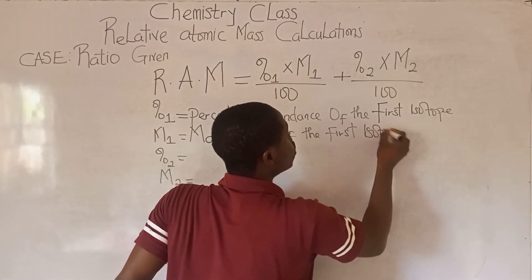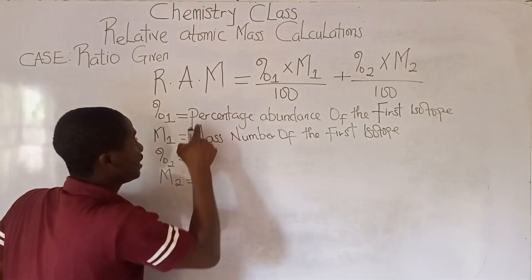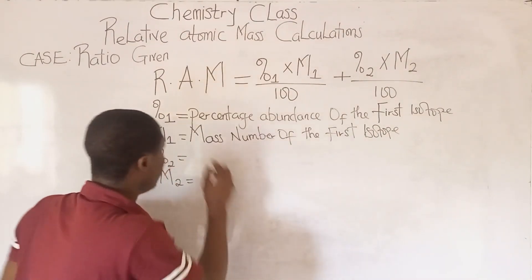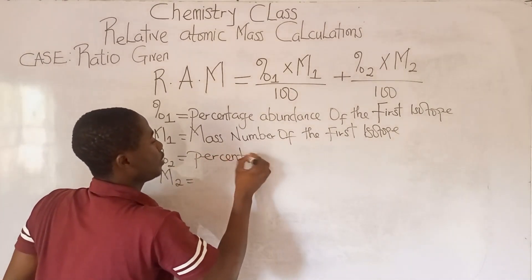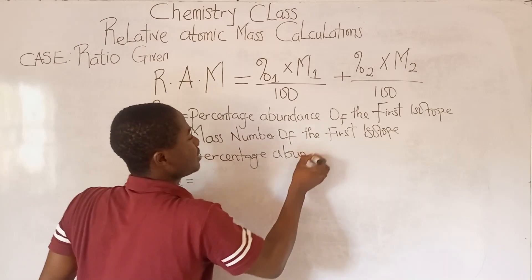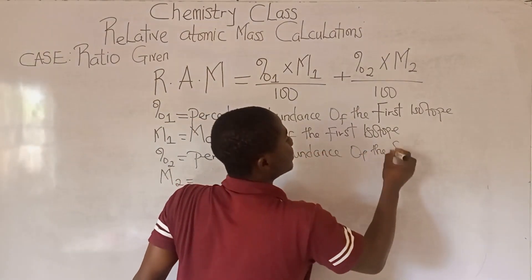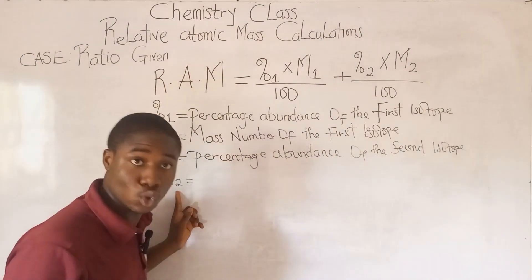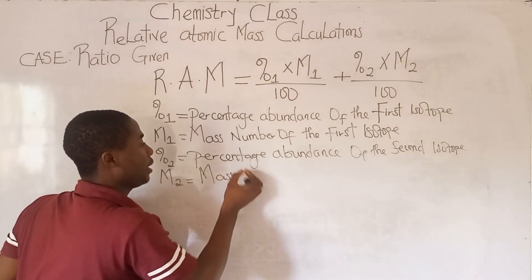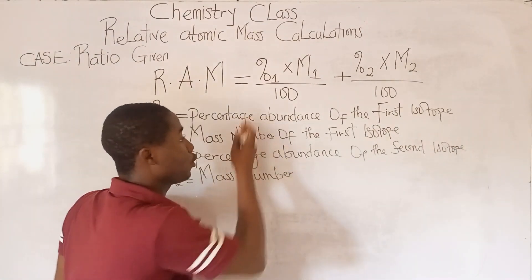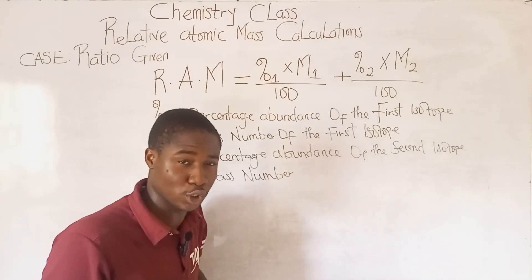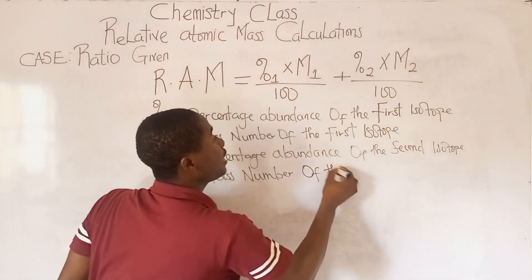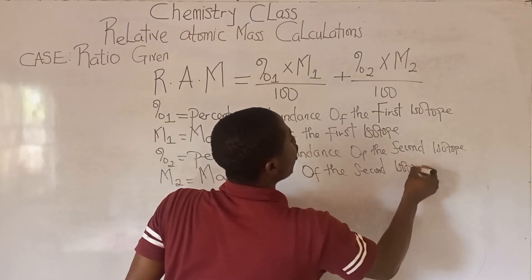Percentage 2 simply means the percentage abundance of the second isotope. M2 simply means the mass number of the second isotope. As we progress in this class I'm going to show you how to locate all these parameters when solving a practice question — it's very easy.